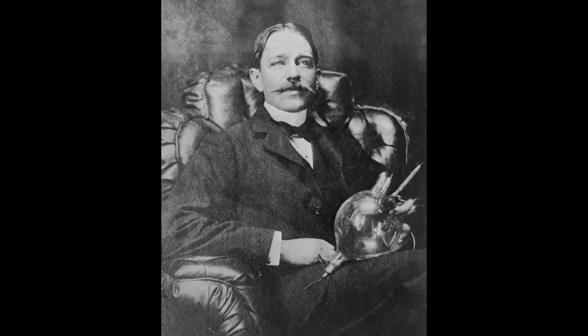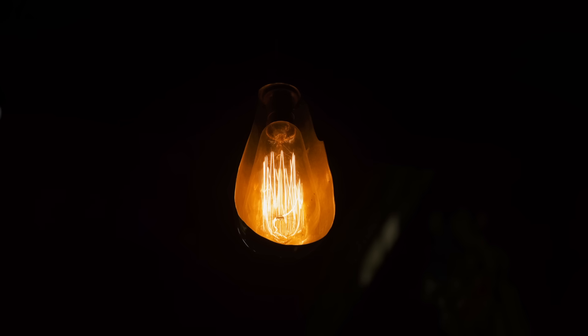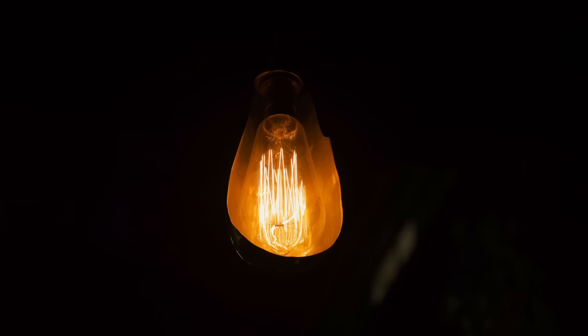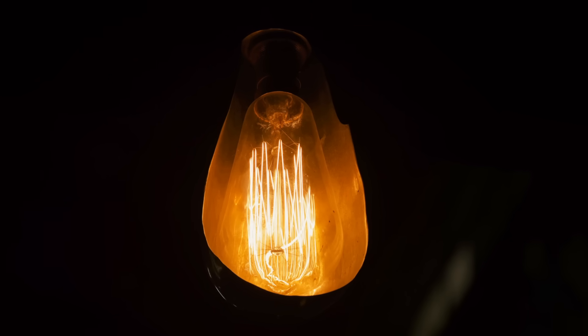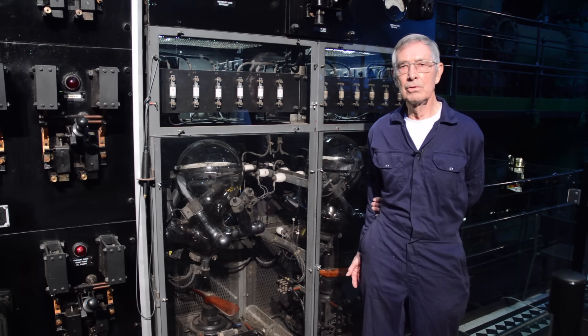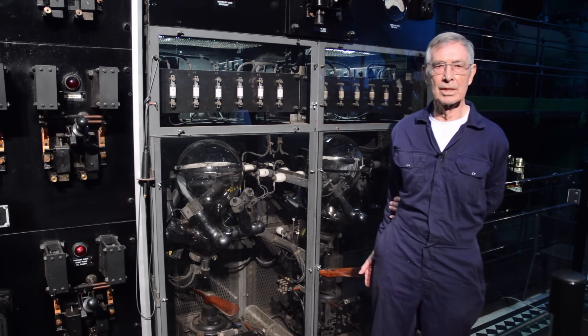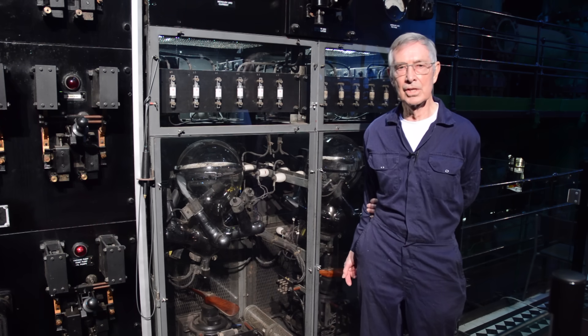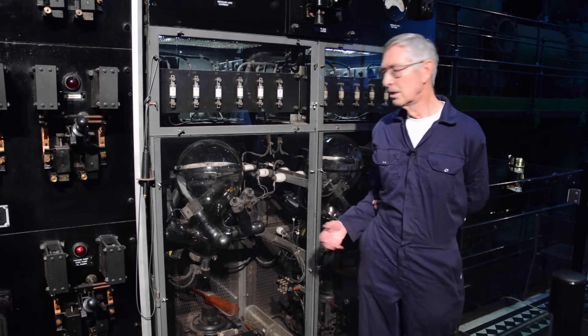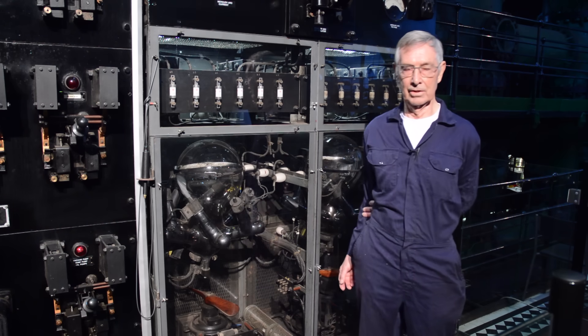Mercury arc rectifiers were invented by a man called Peter Cooper Hewitt. He was the inventor of the mercury discharge lamp. He was trying to produce a light that was brighter than the currently available incandescent lamps, and he patented that in 1901. But he realized that if you put AC across a mercury vapor lamp, it rectified into a form of DC, and from that he developed the mercury arc rectifier.